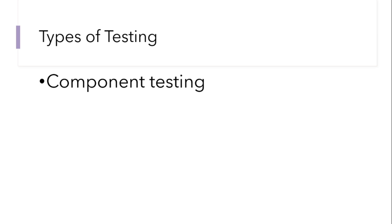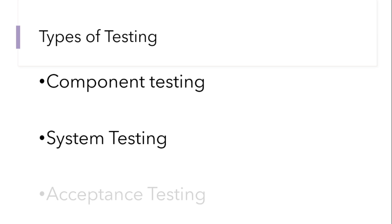The first type of testing is component testing. This is where we take each component of the software to test it individually to see if it is free from bugs. For example, taking the fees management system alone from the school management system and testing it to see if it is error-free — that is termed component testing: picking one component and testing it to see if it is working as expected.